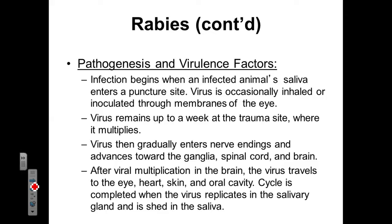The virus can occasionally be inhaled via aerosol or be inoculated to the membrane of the eye — for example, if saliva from the infected animal gets on your hand and then you itch your eye. But overwhelmingly, it's when the rabid animal bites the human. This virus is going to remain viable for up to a week at the trauma site, where it will continue to multiply and gradually enter nerve endings, advance toward the ganglia, then up the spinal cord and eventually to the brain. After the virus multiplies in the brain, it will travel to the eye, heart, and oral cavity. This cycle is completed once the virus replicates within the salivary gland and is shed within the saliva to potentially go to another victim.